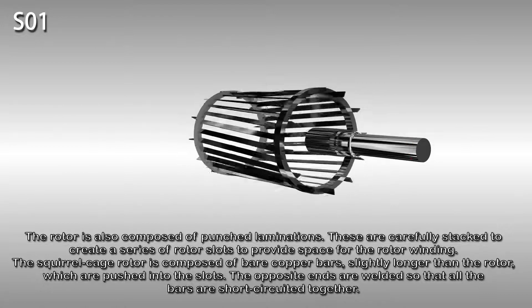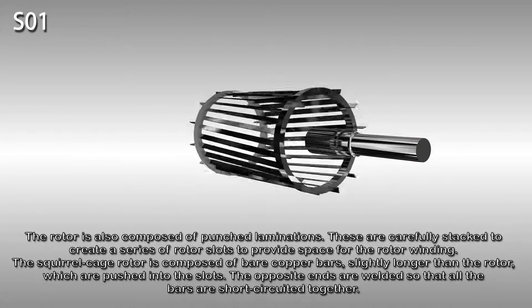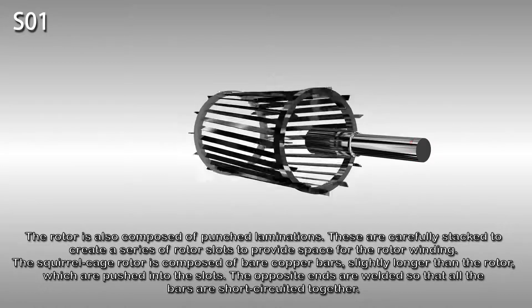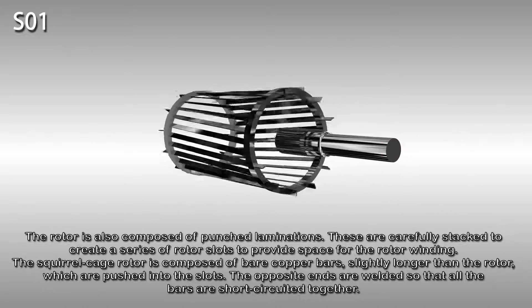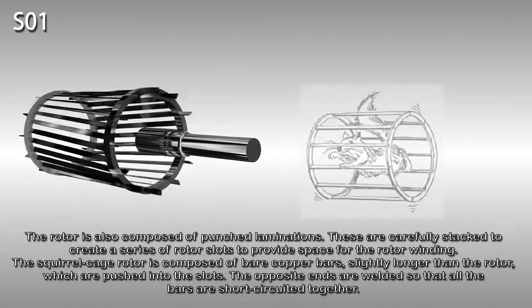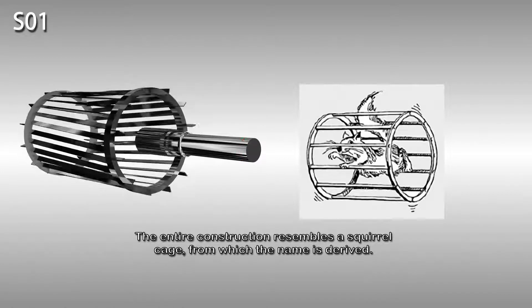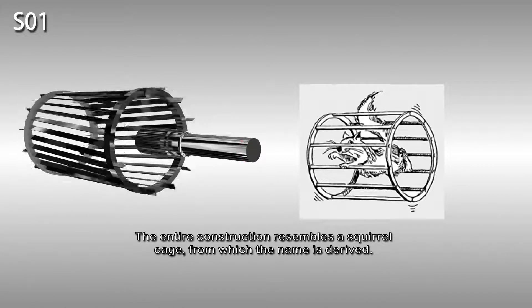The squirrel cage rotor is composed of bare copper bars, slightly longer than the rotor, which are pushed into the slots. The opposite ends are welded so that all the bars are short-circuited together. The entire construction resembles a squirrel cage from which the name is derived.